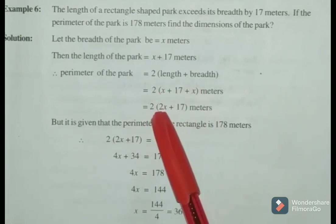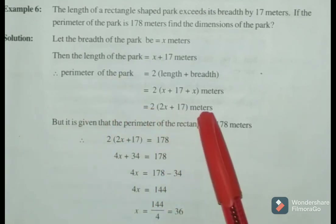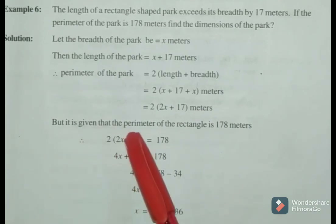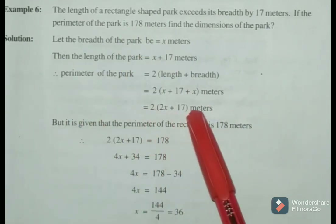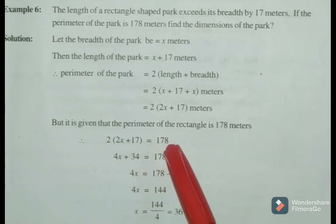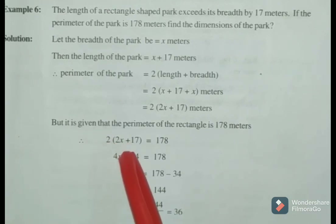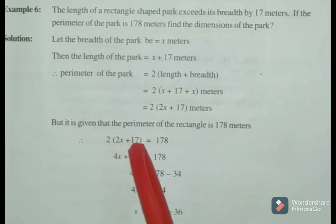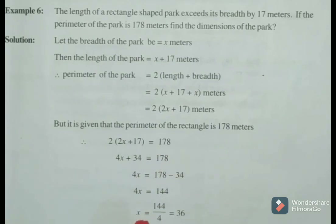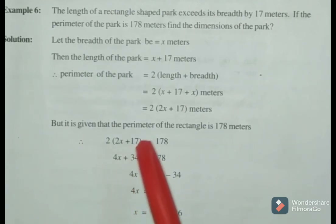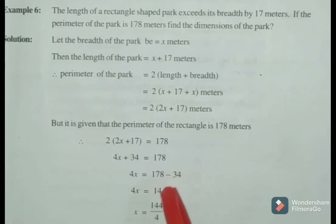It is given that the perimeter of the rectangular park is 178 meters. So 2 into 2X plus 70 equals 178, which gives 4X plus 140 equals 178. Transposing 140 to RHS changes it to minus 140, so 4X equals 178 minus 34, giving 4X equals 144.